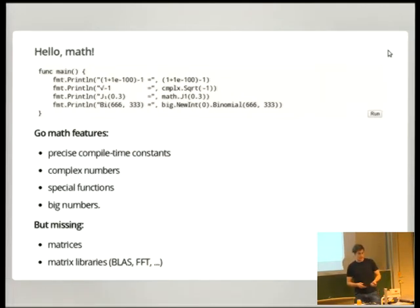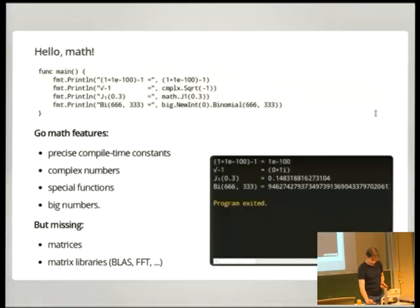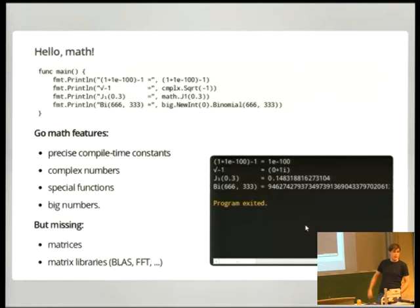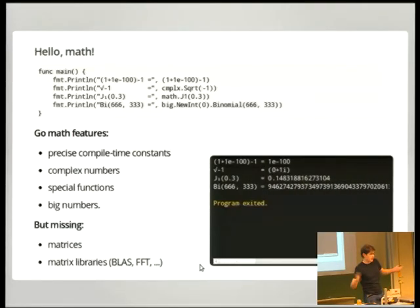Typically a language is introduced with a HelloWorld program. I'm going to show a HelloMath program. This is actual Go code that calls things in the standard math library. I'll compile and run it in my browser — it actually worked. It showcases nice features: precise compile-time constants so expressions aren't truncated to zero, complex numbers right in the standard library, special functions like Bessel functions, and even out-of-the-box support for large arbitrary precision numbers like a very large binomial expansion.